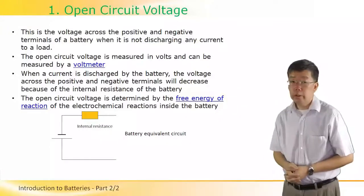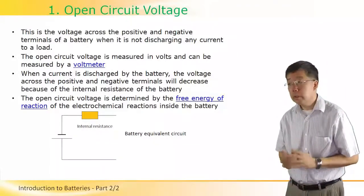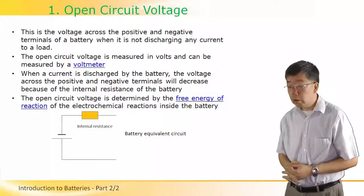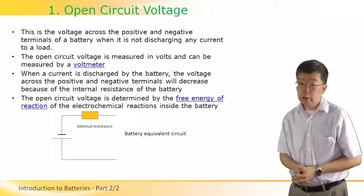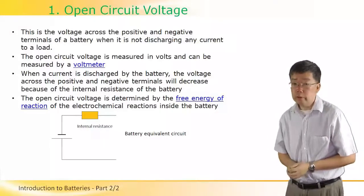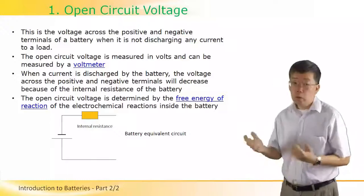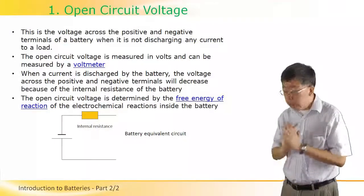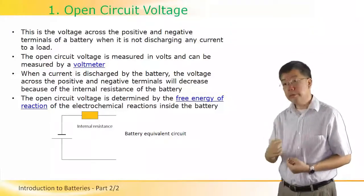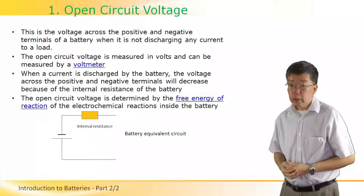In the remaining slides we will introduce several important characteristics of any battery. The first is the open circuit voltage. By definition, this is the voltage across the cathode and the anode — the positive and negative terminals of the battery — when it is not discharging any current. We can measure the open circuit voltage in volts using a voltmeter or multimeter, and the battery should not be discharging any current during this measurement.